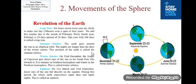The Earth goes around the sun in an elliptical orbit. Summer solstice: the nights are shorter and days are longer in summer. Winter solstice occurs on 22nd December, when the Tropic of Capricorn gets direct rays of the sun as the South Pole tilts towards it. It is summer in the southern hemisphere and winter in the northern hemisphere. This is called the winter solstice.